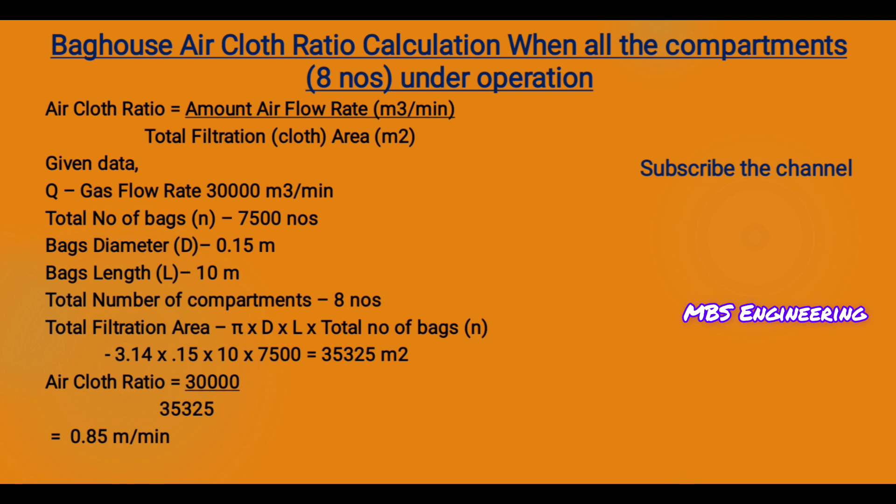The total filtration area equals pi multiplied by D multiplied by L multiplied by the total number of bags. Based on the above data and equation, the total filtration area is 35,325 square meters. The air-to-cloth ratio equals the airflow rate divided by the total filtration or cloth area. Based on the above data and equation, the air-to-cloth ratio is 0.85 meters per minute.